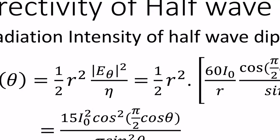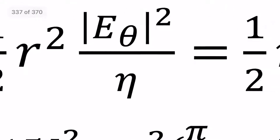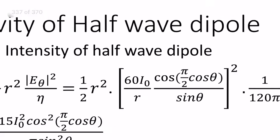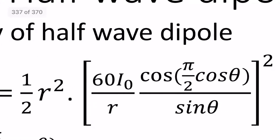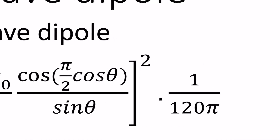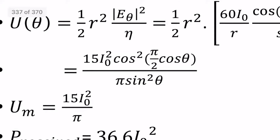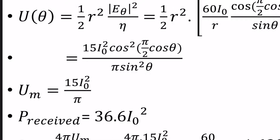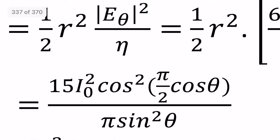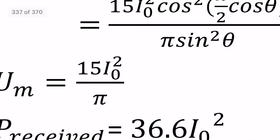Radiation intensity U = (1/2) r² × E_theta² / eta, where eta = 120π is the intrinsic impedance. Substituting E_theta = 60 i₀ × [cos(π/2 · cosθ) / (r sinθ)], we get U = 15 i₀² × [cos(π/2 · cosθ) / sinθ]² / pi. At maximum, cosine function is maximum and sine is 1, giving maximum radiation intensity U_max = 15 i₀² / pi.